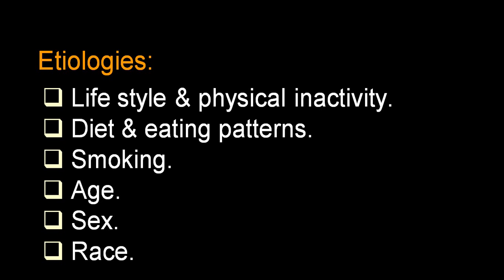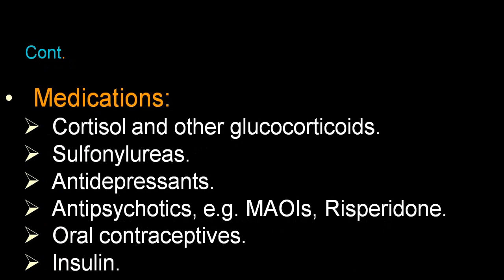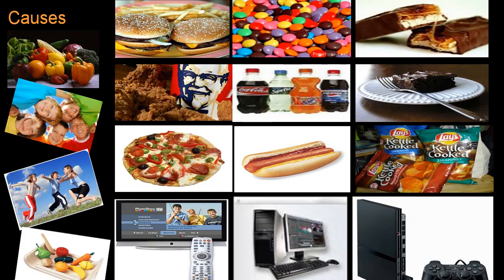Other lifestyle-related factors include physical inactivity, eating habits, smoking cessation, age, sex, and race. Endocrine disorders include hypothyroidism, polycystic ovarian syndrome, and hypothalamic insufficiency. Drugs causing obesity include glucocorticoids, sulfonylureas, antidepressants, MAO inhibitors, oral contraceptive pills, and insulin — as insulin causes hypoglycemia, leading to increased food intake and weight gain. High-calorie diets are the most common dietary factor.